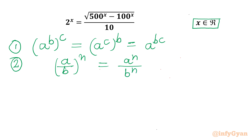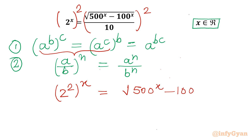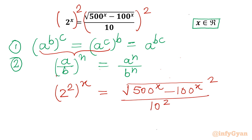Let's apply both properties, but before that I will consider squaring both sides, so the RHS is also squared. Using property number 2 in RHS and property number 1 in LHS, I can write LHS as (2^2)^x. And RHS I will write as (sqrt(500^x - 100^x))^2 divided by 10^2, using property number 2.